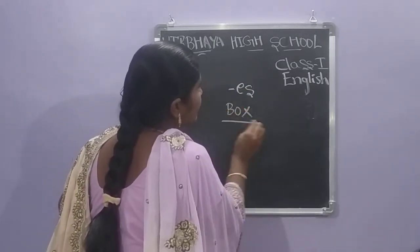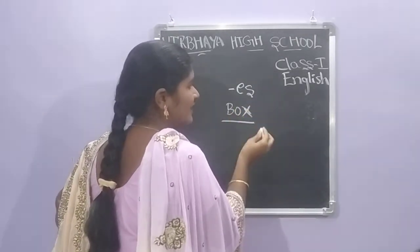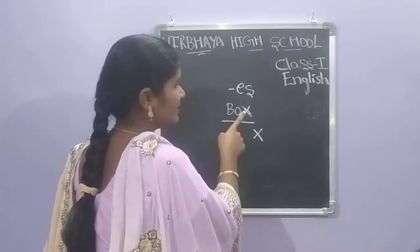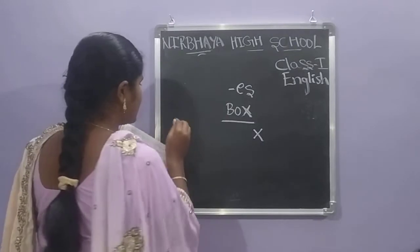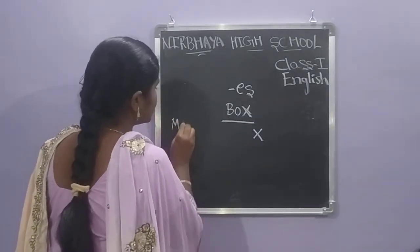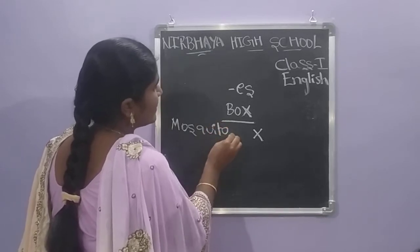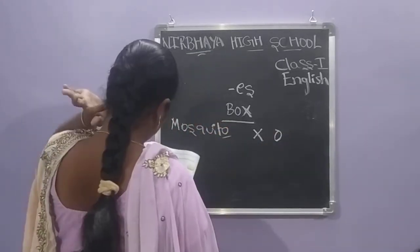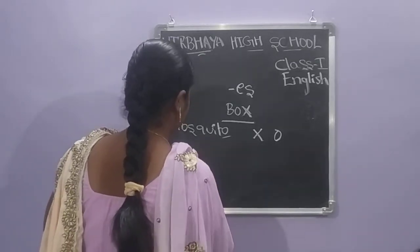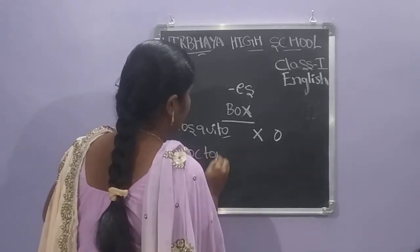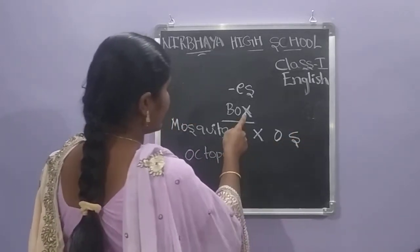For example, the word is 'box'. The word ends with the letter X. Another example — mosquito. The ending letter is O. And the next one — octopus. The ending letter is S. So these words end with X, O, or S.